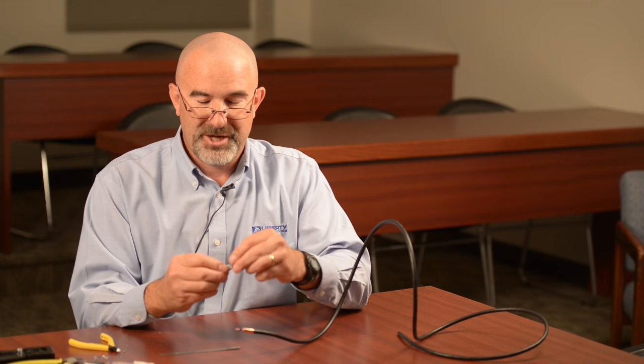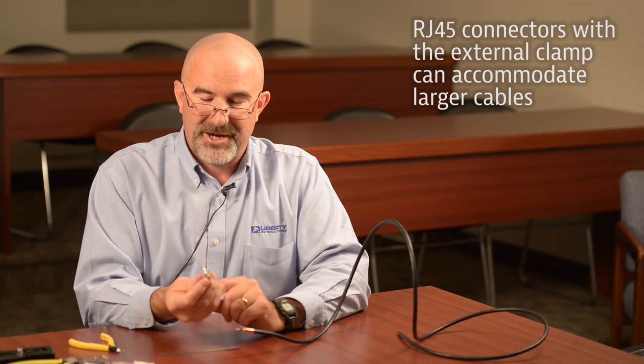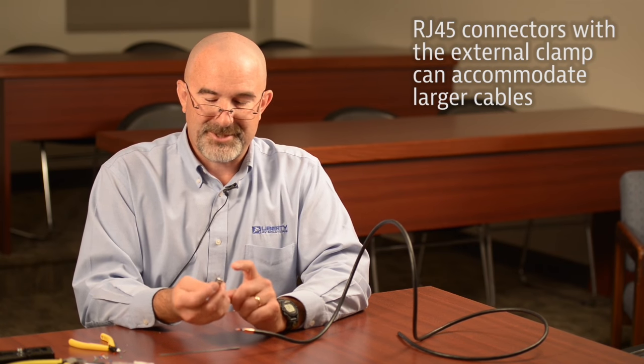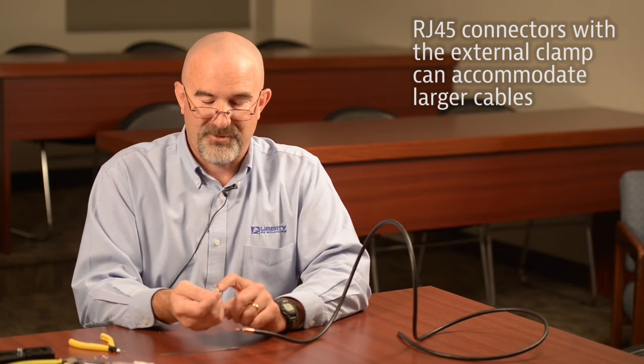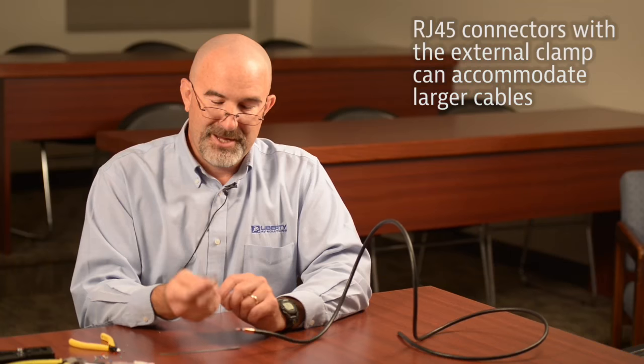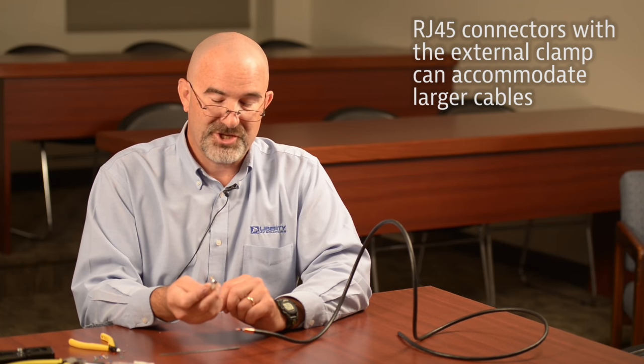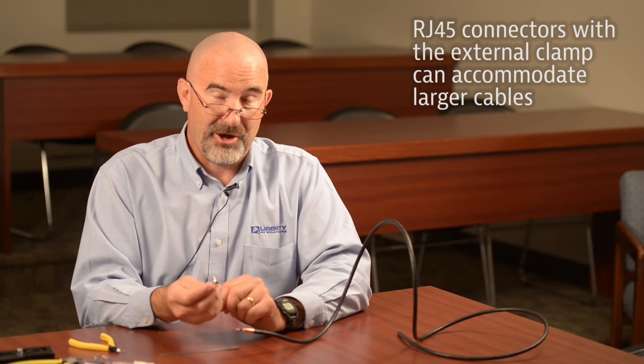I'm going to prepare the connector by bending the shield contact or strain relief 90 degrees from the connector body. One thing about these RJ45 connectors with the external clamp is they have more opening space for cable to go into, so they're much better for large cable. This particular connector can fit cables up to three tenths of an inch in diameter.